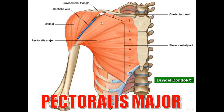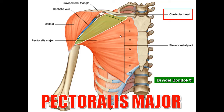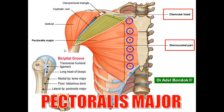This is the pectoralis major muscle. Regarding its origin, it arises by two heads: the clavicular head, which arises from the front of the medial half of the clavicle, and the sternocostal head, which arises from the sternum and upper six or seven costal cartilages. Regarding the insertion, it is inserted into the lateral lip of the bicipital groove. It is supplied by two nerves: the medial pectoral nerve from the medial cord of the brachial plexus, and the lateral pectoral nerve from the lateral cord of the brachial plexus.